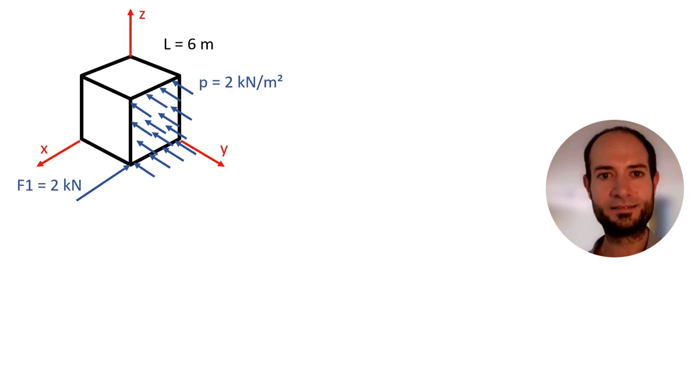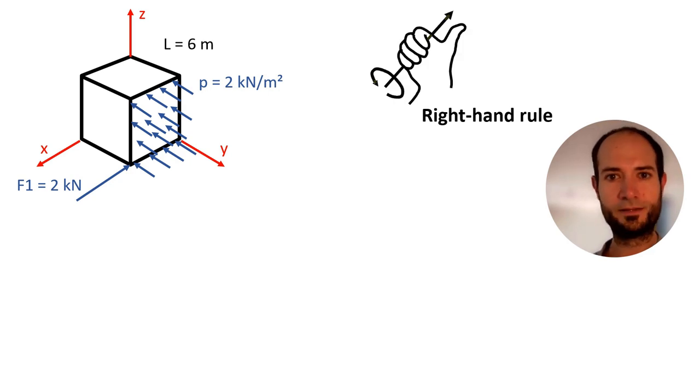Last one. This is a cube supported from ground with a point load and a load over an area. And the right hand rule. As we said on the second lesson, loads can cause moments only if they are perpendicular. So f1 is parallel to the x-axis, so it cannot cause any moment on the x-axis. It may cause moments on y or z.